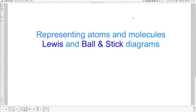Hi there! Welcome back for another lesson. Today I'm going to talk about representing atoms using two different types of diagrams, the Lewis diagram and the ball and stick diagram. Those are going to be useful when we start talking about chemical reaction equations.